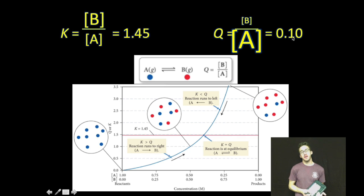But now we want to think about what's going to happen when our Q value is less than our K value. In other words, at the moment that we're measuring the concentrations, there's a much larger concentration of reactant than there is product compared to those concentrations at equilibrium. So K is greater than Q.